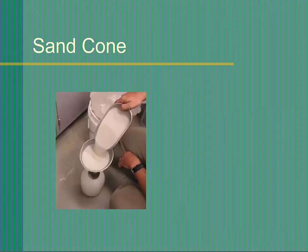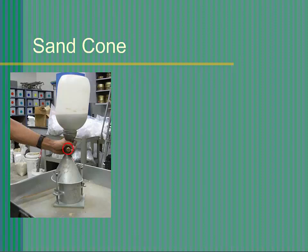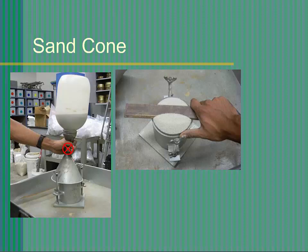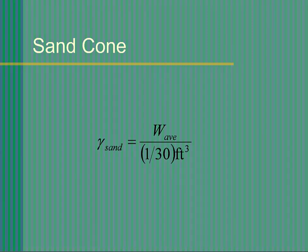To determine the unit weight of the sand, refill and reassemble the device. Obtain a proctor mold and remove its collar. Leave the base attached to the mold and determine the weight of the empty mold and base. Hold the sand cone assembly over the proctor mold and open the valve. Allow the sand to completely fill the mold. The objective is to fill the mold in the same way that you will fill the hole in the field. When the mold is filled, close the valve and remove the sand cone. Carefully strike off the top of the mold with a steel straight edge to obtain exactly one-thirtieth of a cubic foot of sand. Clean any sand off the outside of the mold and base, then weigh the mold and base filled with sand. Empty the mold and repeat this process two more times. Using the average weight of sand filling the mold and the volume of the mold, you can compute the unit weight of the sand. It is important not to vibrate the sand cone during calibration or testing, as the unit weight of the sand will change if it is vibrated. We want the sand to be in a loose state both in the lab and in the field.